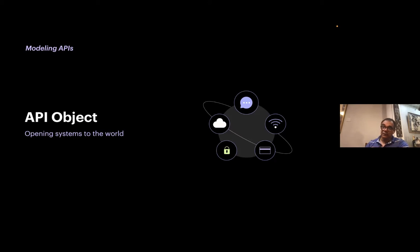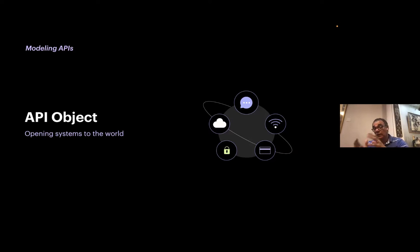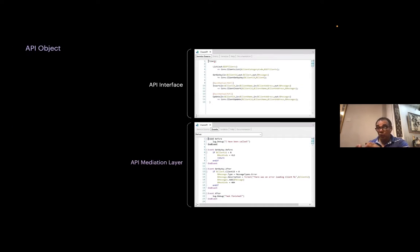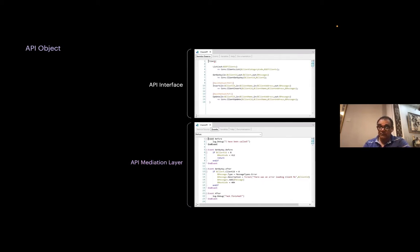For example, if you have a client and you want the client list, modify a client's name, or handle the invoice for a client, those should be processes called from the API object. The client API object would expose all the methods conceptually working on the same entity. What you expose is the API object and no longer the procedures themselves, which is very important. You will have a mediation layer that allows before-and-after events to manage all the parameters passed to the object implementing the process.